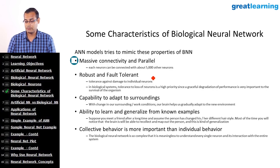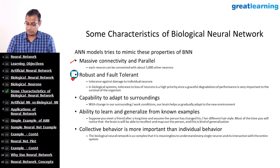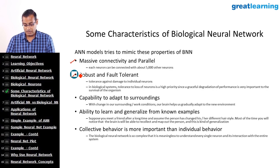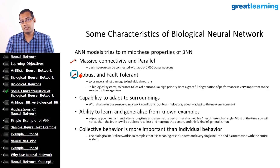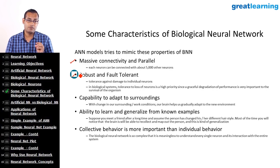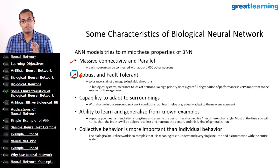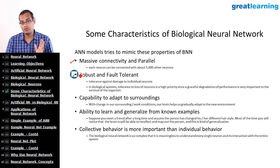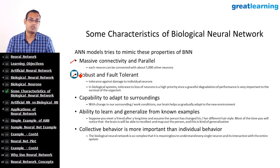The characteristics of a biological neural network: one is a massive interconnected parallel structure. Because of this interconnected and parallel structure, it leads to another characteristic — robust and fault-tolerant. If some neurons in our brain die, our brain does not stop processing. Our brain continues to function because the signal transmission from one neuron to another still continues due to the parallel interconnected structure. The functionality of the brain does not diminish to a large extent because of certain neurons dying.